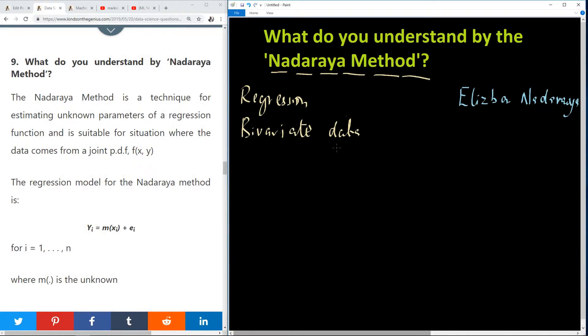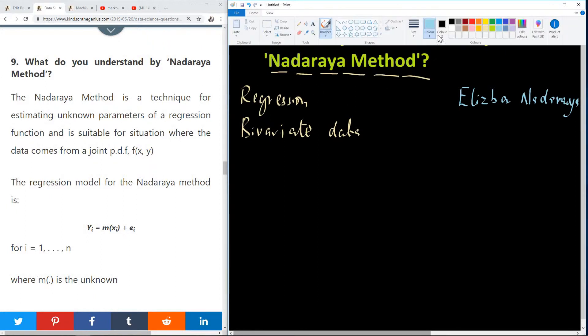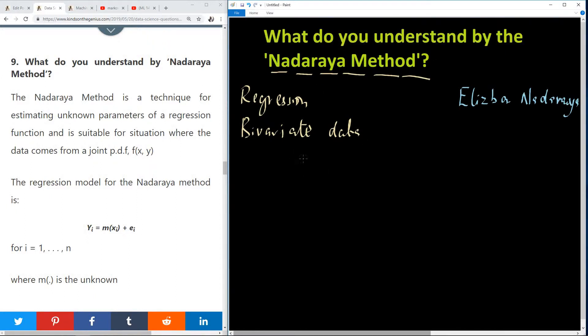So what we are saying is that we have a bivariate data such that we have something like, let's take a different color, when you have x1, y1, x2, y2, x3, y3, all the way to xn, yn. So this is a bivariate data.